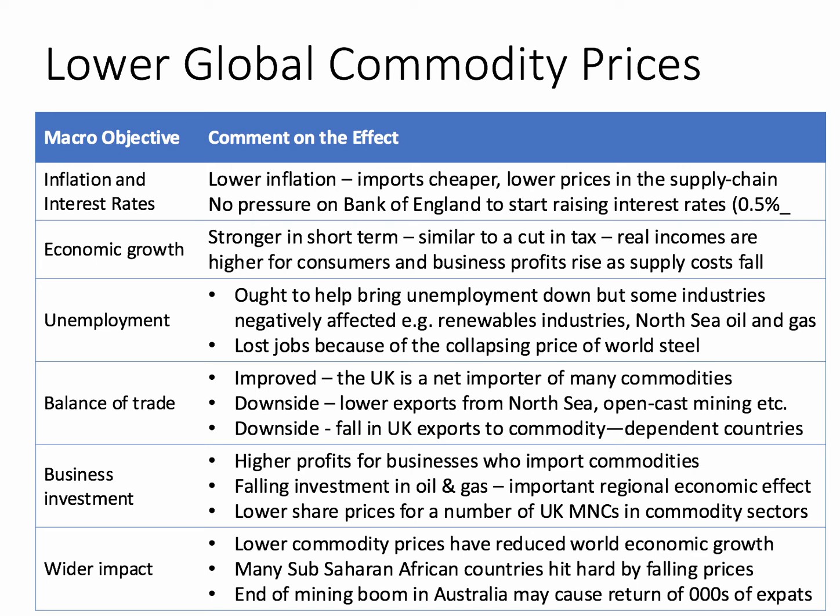For our trade balance — it depends. We import lots of commodities, so they're cheaper, which is good news. But on the other hand we're getting less per barrel of oil we sell. And oil-dependent countries like the UAE and Saudi Arabia will slow down and we'll sell fewer exports to them. In theory, falling global commodity prices is good news for businesses in the UK that import commodities, but bad news for British oil companies and not very good news for renewable producers. There's a wider impact too: lower commodity prices tend to reduce world growth, with less growth in commodity-exporting countries — sub-Saharan African countries are being hit pretty hard at the moment.